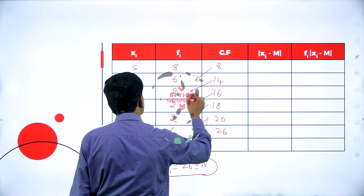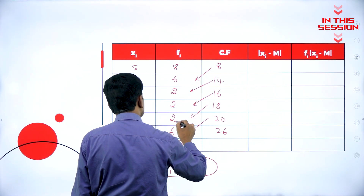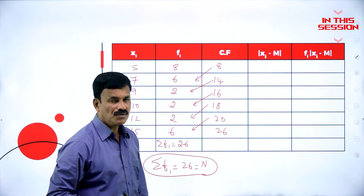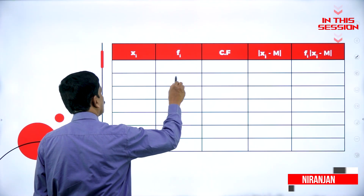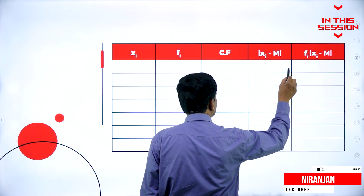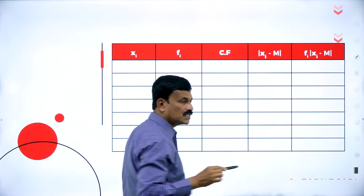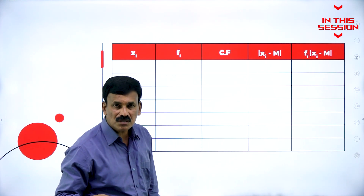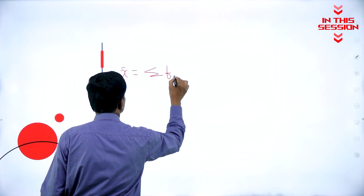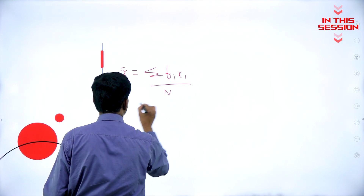8 plus 6 is 14, 14 plus 2 is 16, 16 plus 2 is 18, 18 plus 2 is 20, 20 plus 2 is 26. Cumulative frequency: xi, fi, cumulative frequency, xi minus m, then multiply xi minus m with f and simplify using the formula. Therefore, x bar is equal to sigma fi xi divided by n.